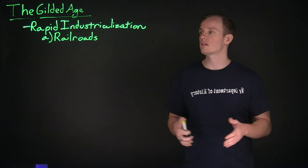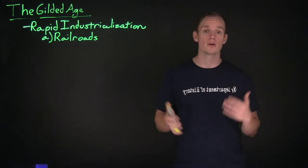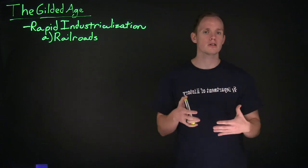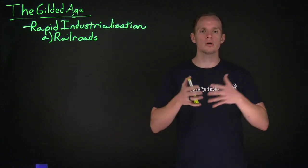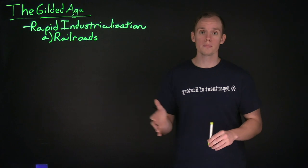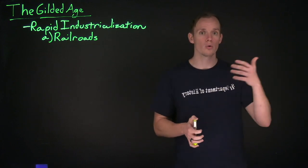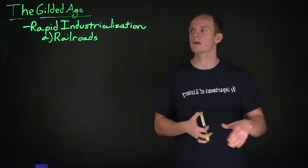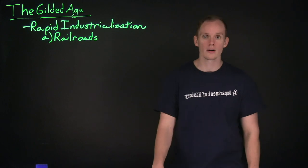The Gilded Age is going to be characterized by a rapid industrialization that was caused by the Civil War. During the Civil War, American industry was beginning to build mainly for the war effort. However, after the Civil War, that industry would only continue to expand — but rather than producing war materials, it would be producing commercial products or industrial goods. Today we're going to be focusing on that rapid industrialization.